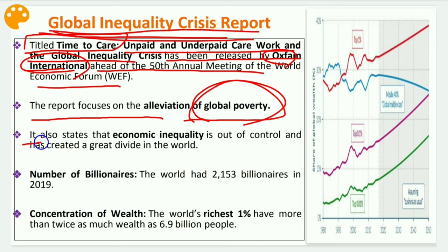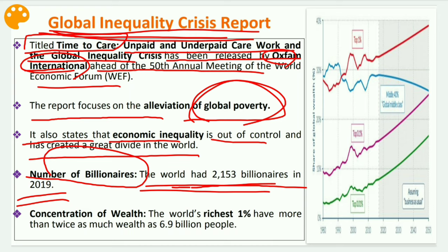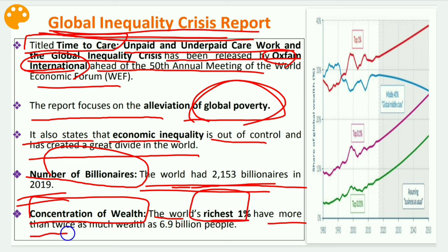The report states that economic inequality is out of control and has created a great divide in the world. The world has 2153 billionaires in 2019, showing high contrast of inequality in income and wealth. Regarding concentration of wealth, the world's richest 1% have more than twice as much wealth as 6.9 billion people. In India's case the situation is even worse.